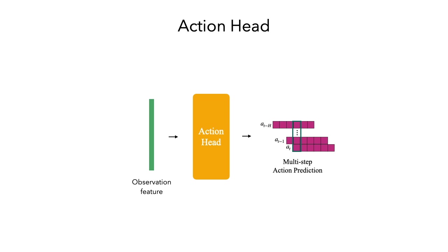This observation feature is then passed through an action head for multi-step action prediction. Having a separate action head allows us to unify unimodal action prediction through MLPs and multimodal prediction through behavior transformers and diffusion policy under the same framework.